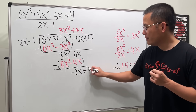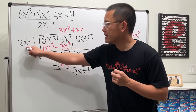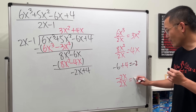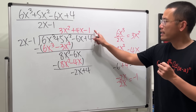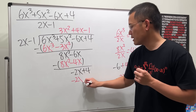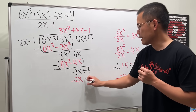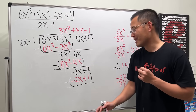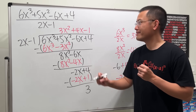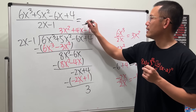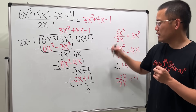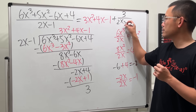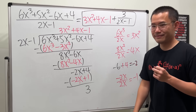Bring down the plus 4. Negative 2x over 2x gives negative 1, so put negative 1. Negative 1 times 2x is negative 2x, and negative 1 times negative 1 is plus 1. Subtract. Lastly, 4 minus 1 gives 3. So the answer is 3x² + 4x - 1 + 3/(2x - 1).